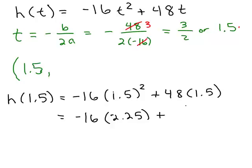48 times 1.5 is 72. And then we have to do -16 times 2.25 and that's -36. So, we've got that H(1.5) is 36. What does that mean? That means the height at 1.5 seconds is at 36 feet.